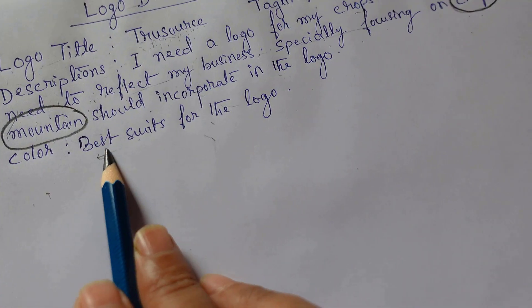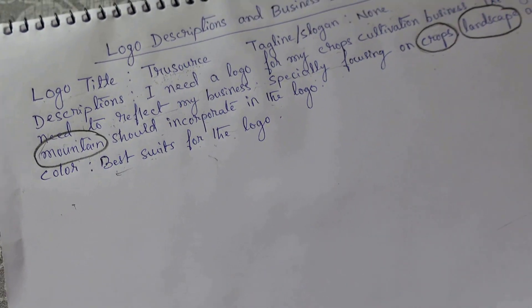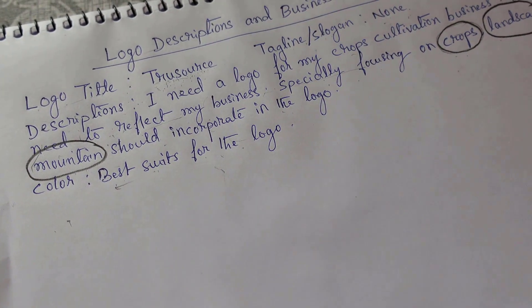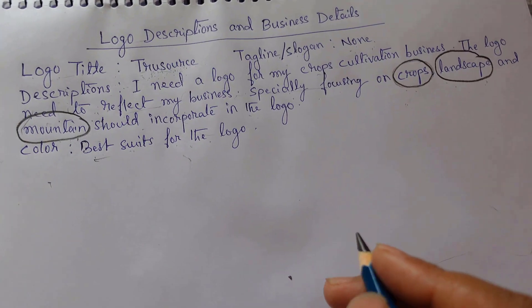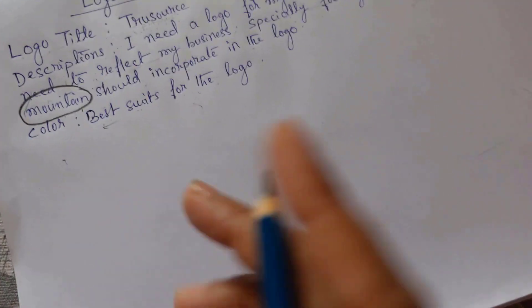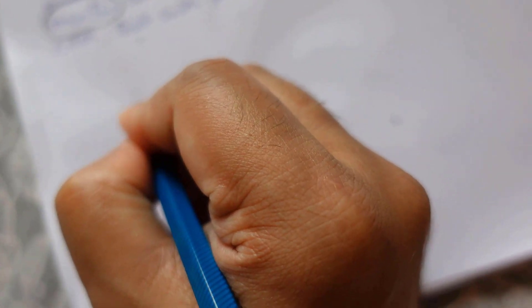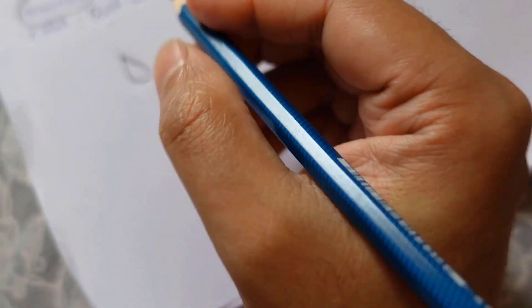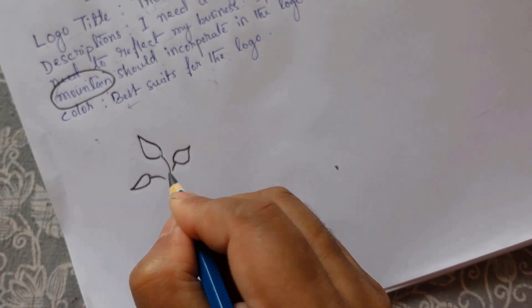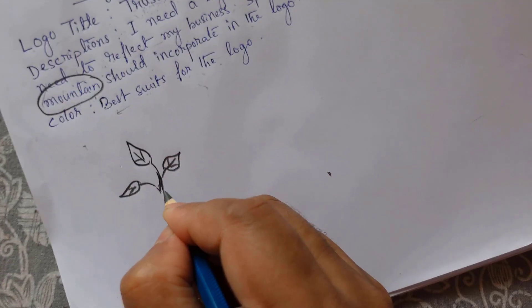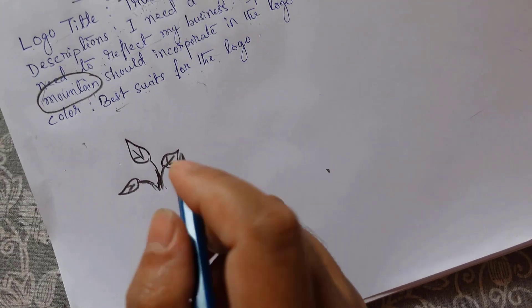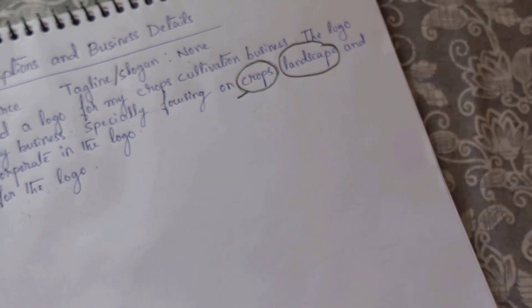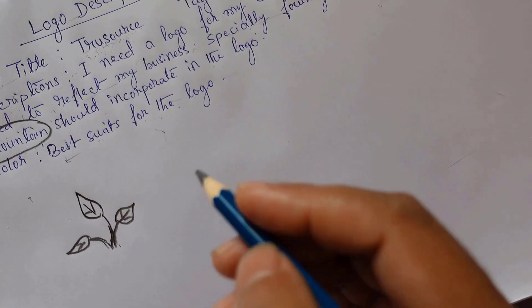For color preferences the client says 'best suited for the logo,' meaning she doesn't have any particular color suggestions — it depends on the designer to choose what's best suitable for this kind of logo. I'll start with the crops and draw a rough sketch of them.